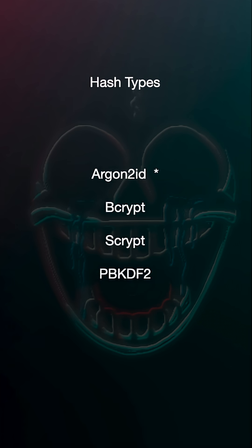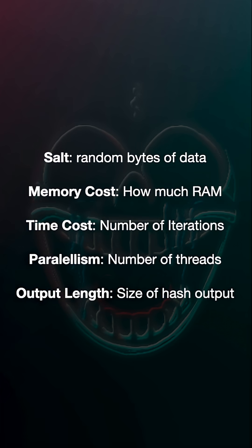So when a password gets hashed with argon2id, some extra information needs to be provided with it. First, a salt is provided, which is some random bytes added onto the password. The salt should be unique to your password, and it gives it a little something extra to make the hash more secure. Some server configuration parameters are added as well, like memory cost, time cost, and parallelism, to determine how many resources will be used and how many iterations will be done.